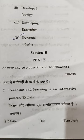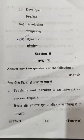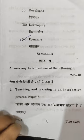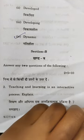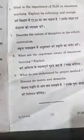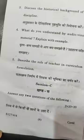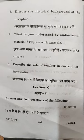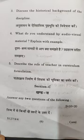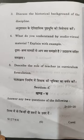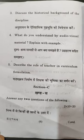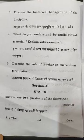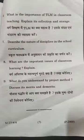Section B has five questions and you will have to attend two questions. For those two questions you will get five marks each. Section C: you will have to attend two questions, and for those two questions you will get ten marks each.